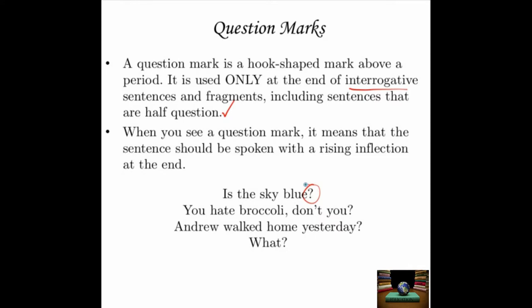'You hate broccoli, don't you?' — this is a sentence that's half-questioned. 'You hate broccoli' is a declarative statement; 'don't you?' is the question, so it ends with a question mark. 'Andrew walked home yesterday?' — 'Really? Andrew?' — Andrew doesn't like to walk, so we have the question mark. And 'What?' — again, the voice goes up, so you have the question mark.